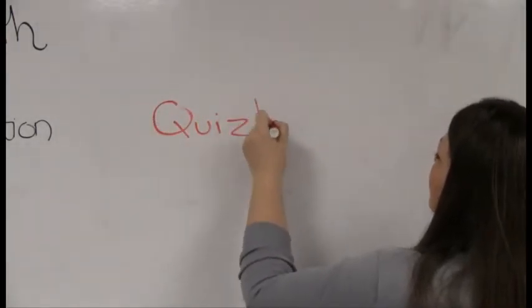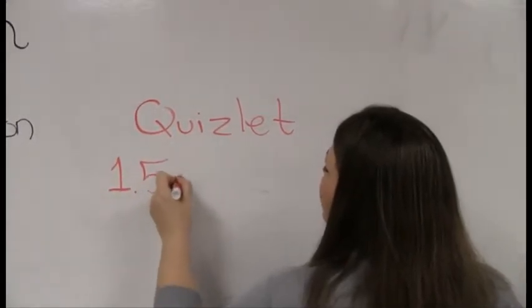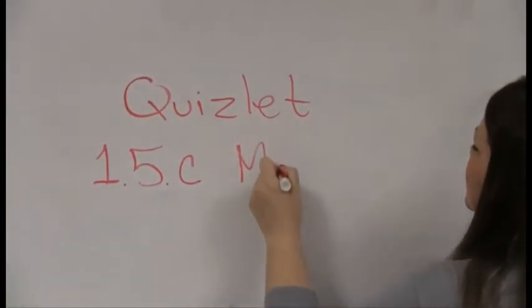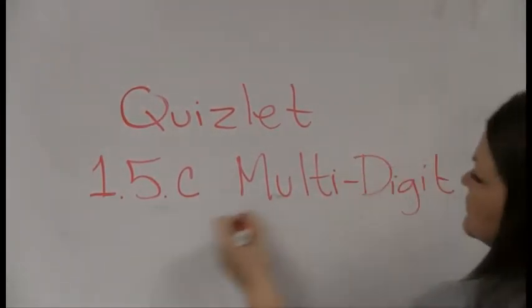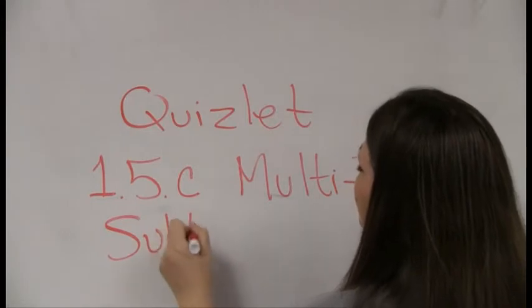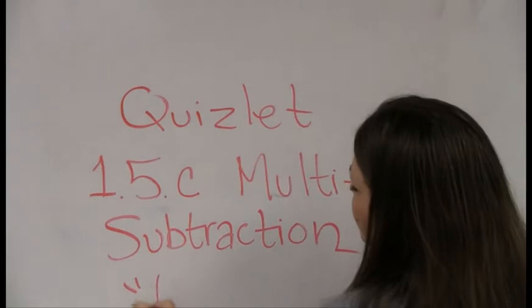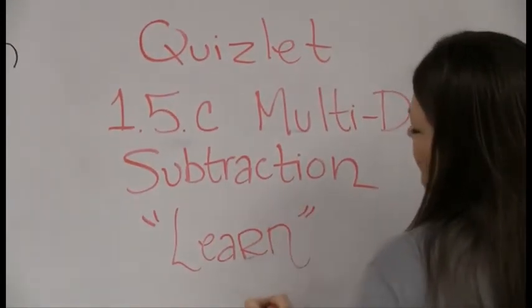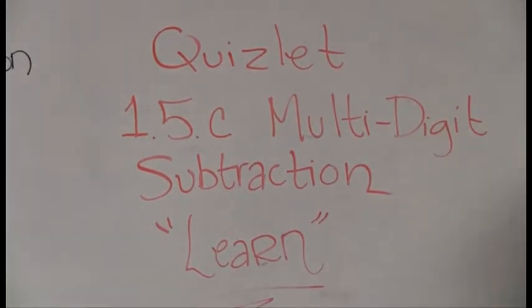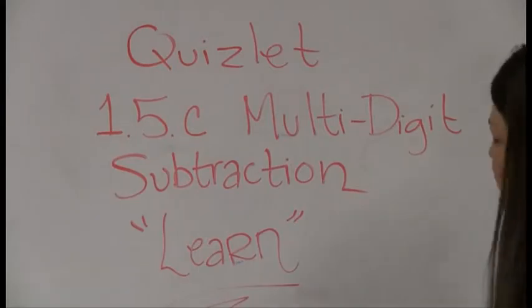I want you to go to Quizlet. The set you're going to choose is set 1.5c and it's called multi-digit subtraction. I would really like you to practice that in learn mode. I'm not finding scatter very helpful on these. We need to actually just practice doing the math. Make sure that it works for you and then join me for the multiplication video.